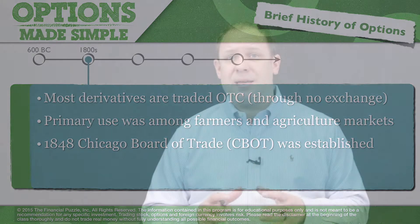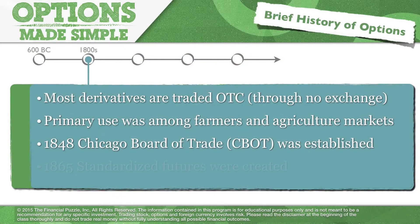Chicago centralized all of the trading activity and started to create more standardization with what we would today call futures contracts, so that farmers, ag developers, and others could find counterparties and offset their risk. By 1965, standardization was firmly established in the futures market, and futures trading as we know it today became very well established. Futures trading as a derivative in the United States has a long history going back to the 1800s.